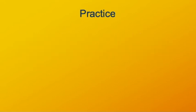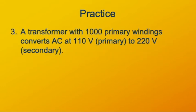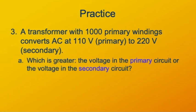Here's another scenario for you to think through. A transformer has a thousand primary windings. The voltage in the primary coil is 110 volts, and in the secondary is 220 volts. Which is greater, the primary voltage or the secondary voltage? I hope you answered the secondary because 220 is larger than 110.